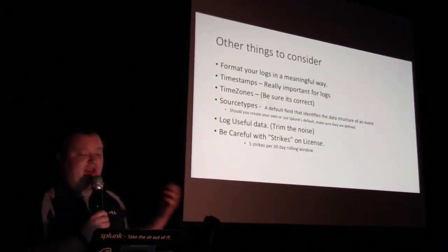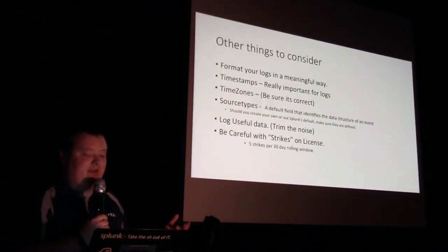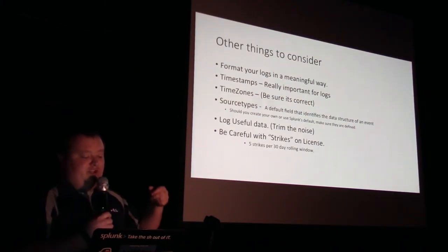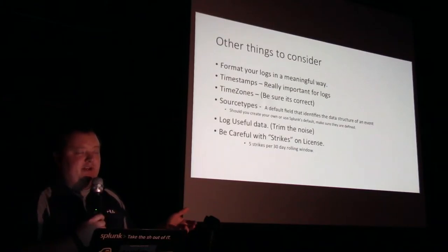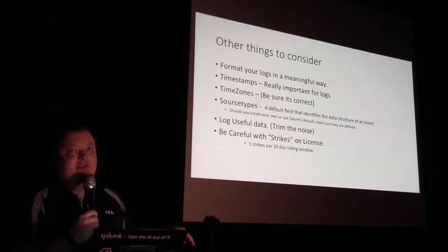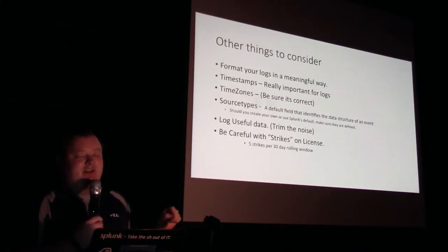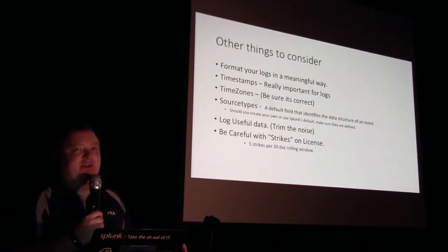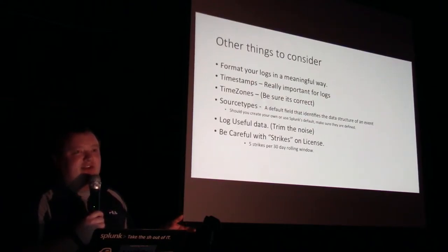Source types - these are things like HTTP logs, firewall logs. Making sure you're logging useful data is important. You don't want to dump as much stuff as you want because then it doesn't become meaningful and you ruin your license, which leads to strikes. Five strikes in a 30-day rolling window, and what Splunk will do is you can keep sending logs and it'll keep indexing, but after the fifth strike you can no longer search any of the stuff you've indexed. You have to send Splunk an 'I'm really sorry' email and they'll normally lift it - but remind you every five sentences that you broke your license and should buy more.